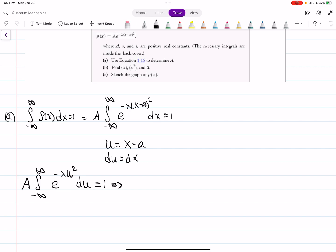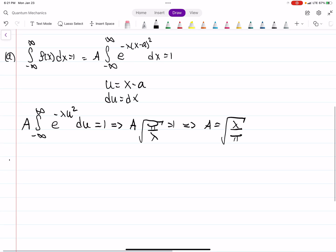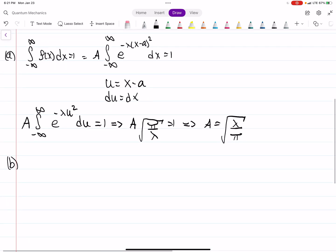And then this is a standard integral, so I'm just going to solve this really quick. I'm going to try to make these videos a little bit faster. I notice most people do not watch most of the video, so I'm assuming you guys want me to move a little faster, which I'll do. That's part A. So for part B, we need to find the expectation value of x, x squared, and then sigma.